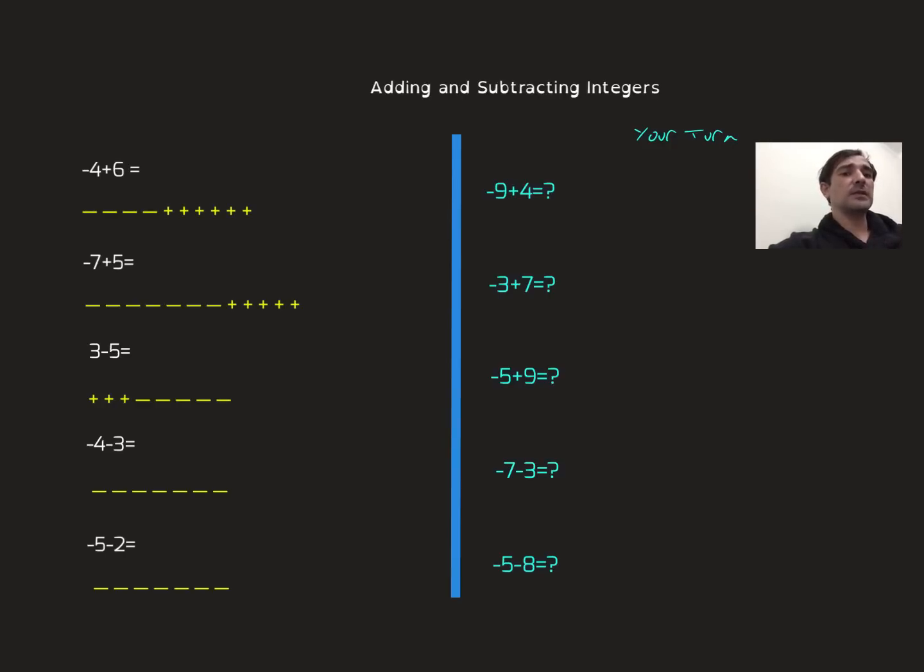Let's start from the first example, negative 4 plus 6. Negative 4 means I have 4 negative signs, as you see. And plus 6 means I have 6 positive signs. Now let's use this technique and solve every single question here.